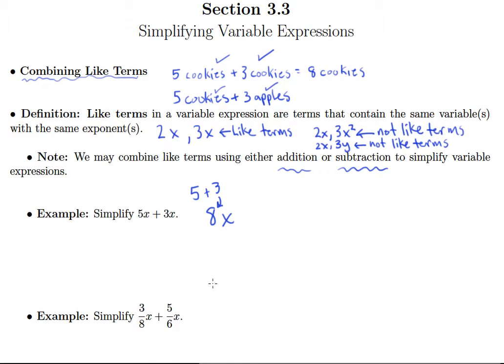And we'll have the same thing here, but of course we have fractions involved, so we better make sure we have common denominators so that we can combine our like terms. So the least common denominator of 8 and 6, of course, is 24,